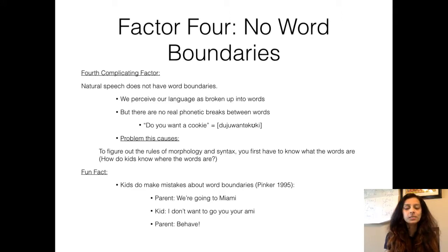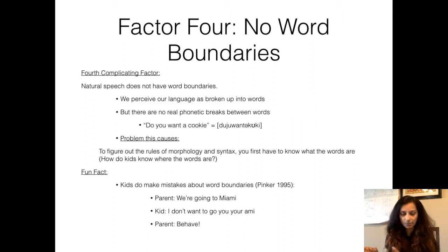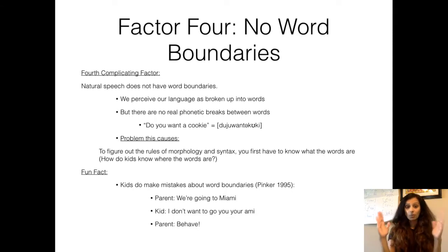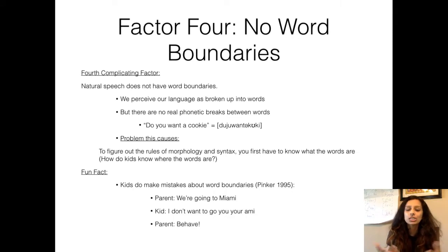The fourth factor is that we all speak language really quickly. When you speak to a child, you are not breaking the sentence up into different words and syllables. If you want to ask your child 'Do you want a cookie?' you're not saying each word separately — you're saying it all in one go: 'Doyouwannacookie?' It sounds like one word. So how does the child actually know how to break this up into different words and know where word boundaries are? Here's a fun example: the parent says 'We are going to Miami' and the kid says 'I don't want to go to your Ami' — because the child doesn't know where the word boundaries are in the sentence.